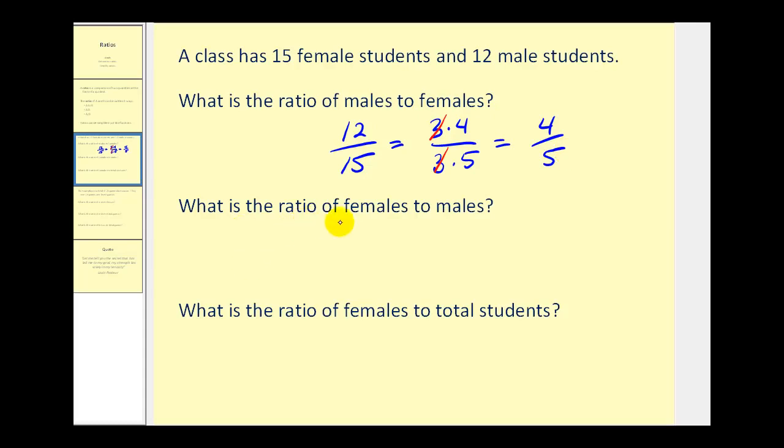If we want the ratio from females to males, that would be 15 to 12, which would simplify to 5 to 4.